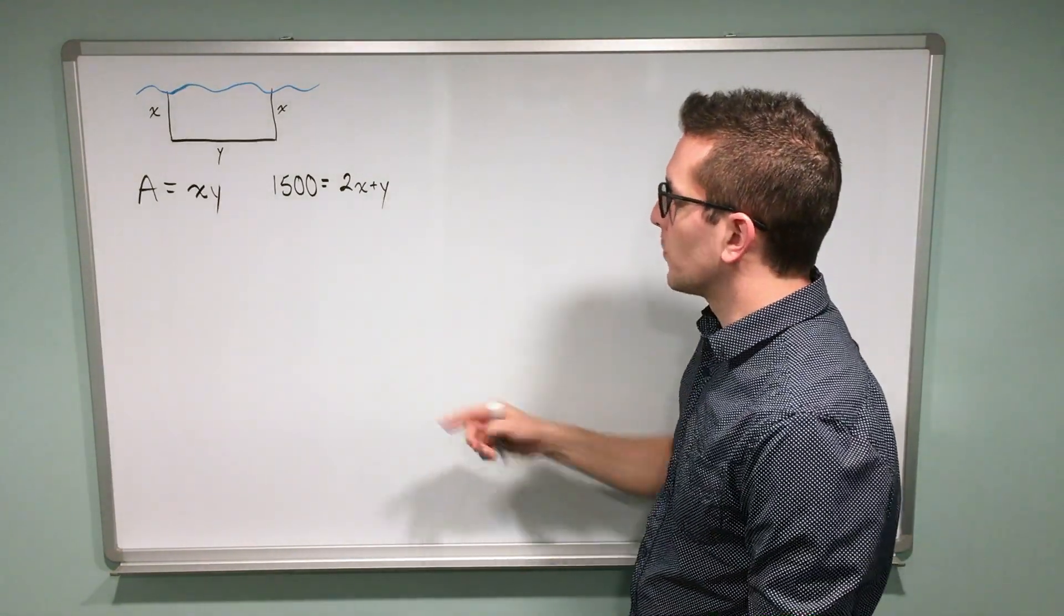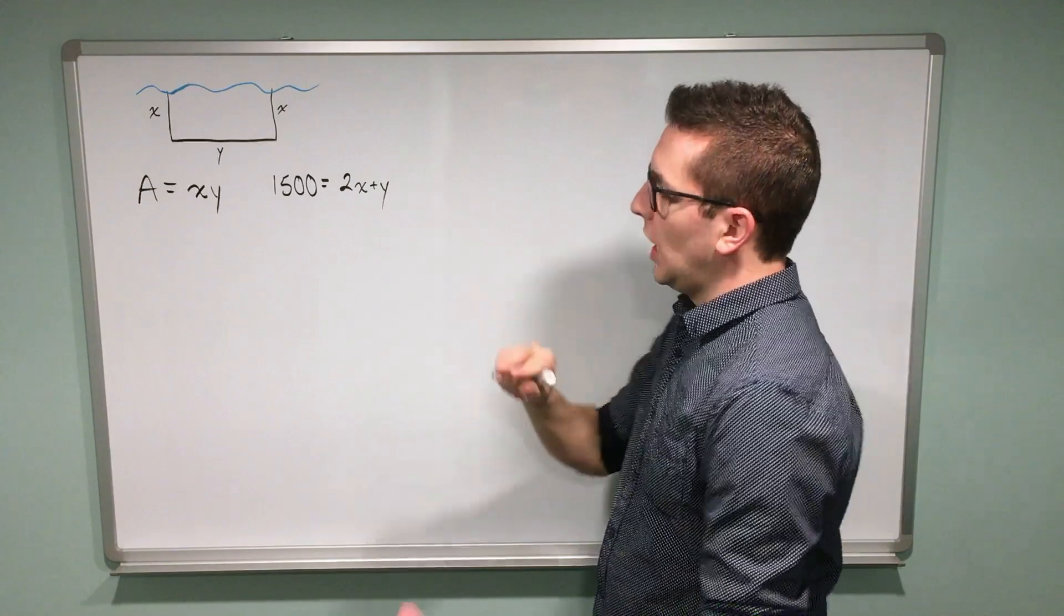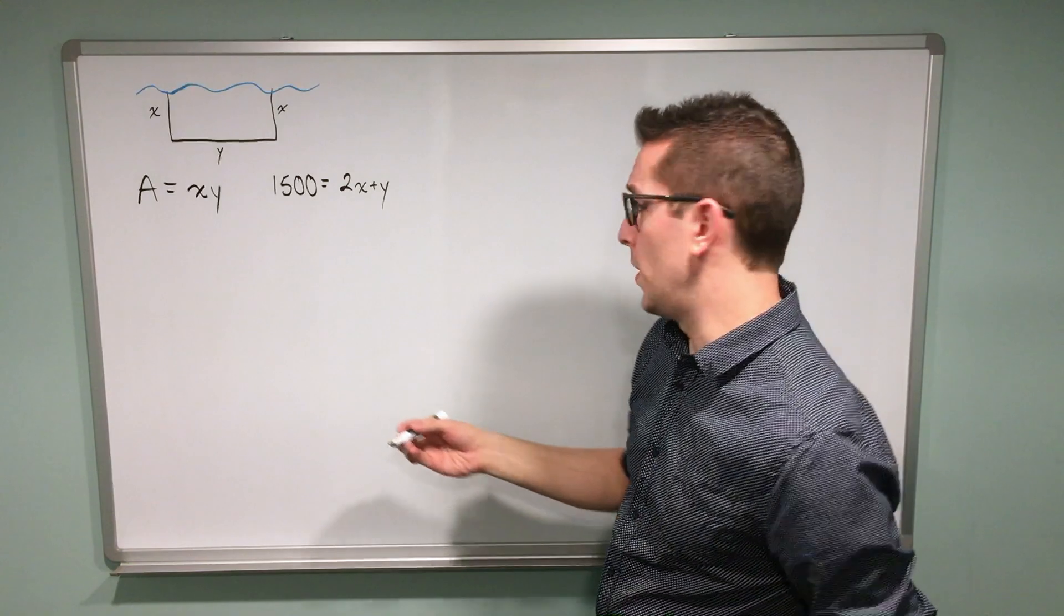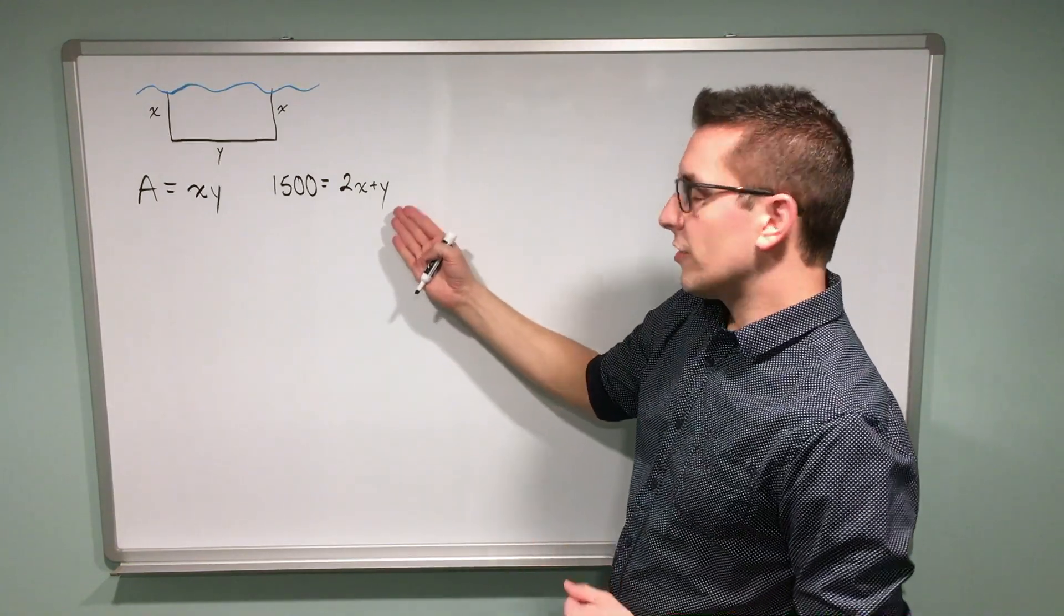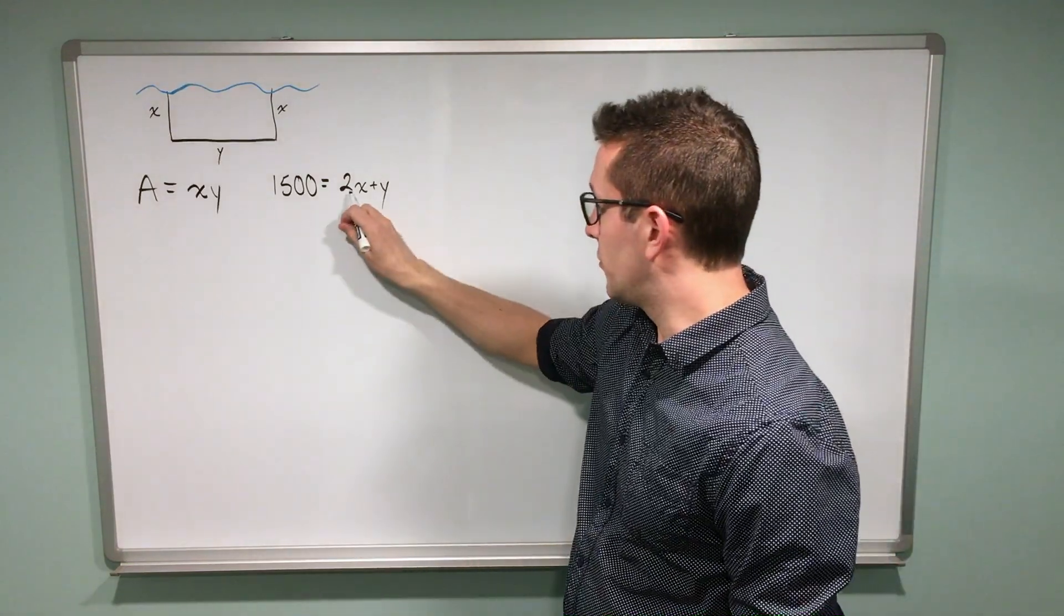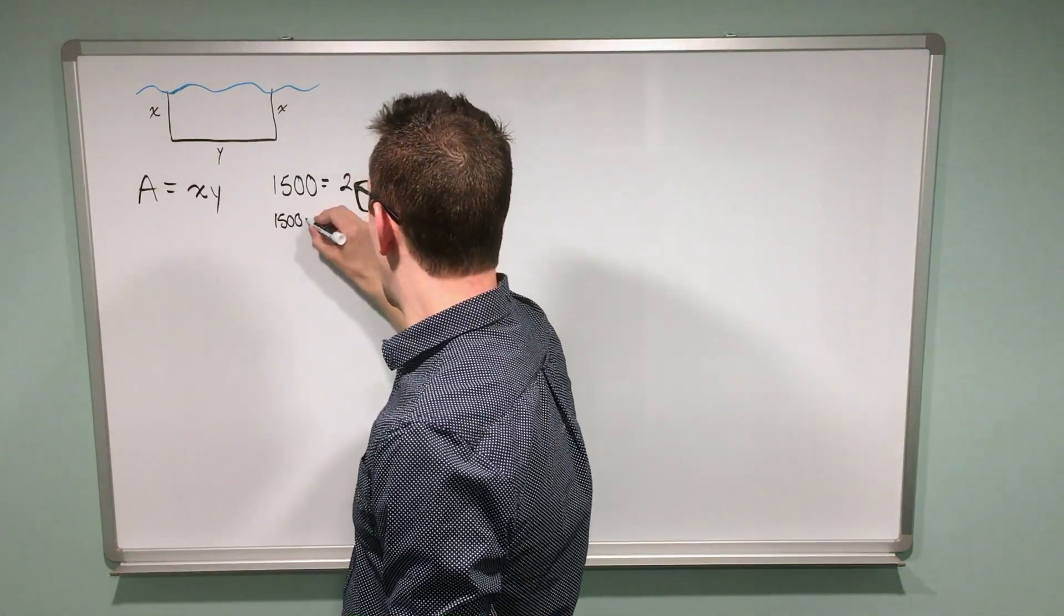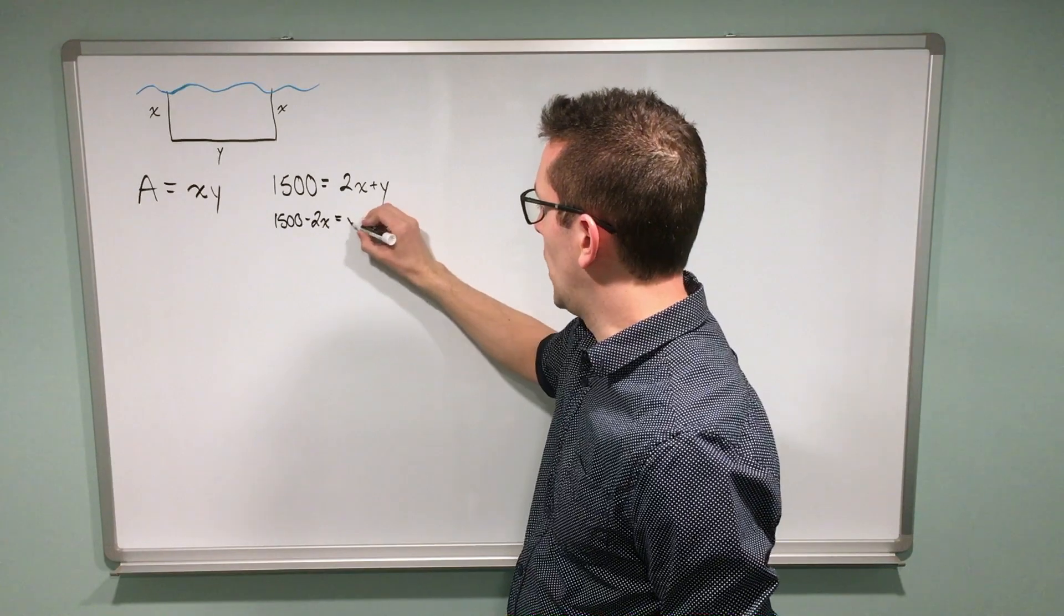What I'm going to do next is take my second equation and rearrange it in a way that I can solve for one of my variables. In this case, it's easiest to solve for y. So I'm going to bring this 2x over to the other side, and I end up with 1500 minus 2x equals y.